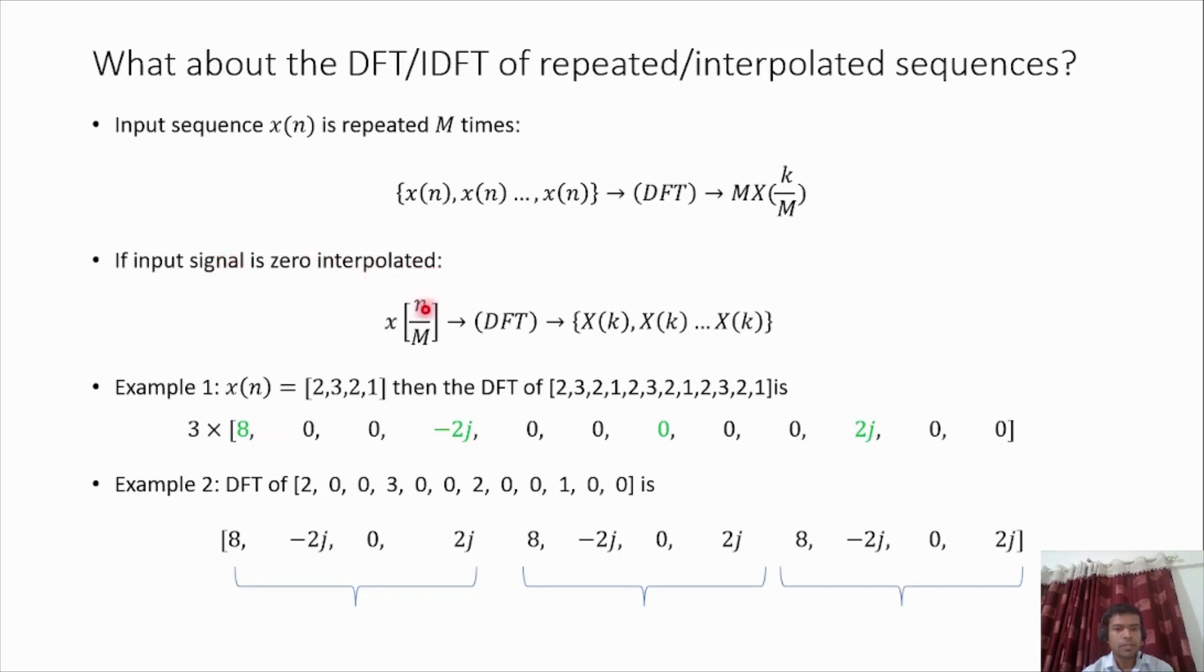Similarly, if the input signal is zero-interpolated, this is zero interpolation. If you want to calculate the DFT, the spectrum will be repeating. If M is 3, with three times interpolation, two zeros will be interpolated, and then the output will be repeated three times.